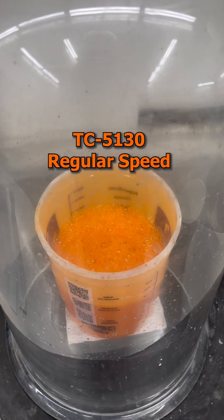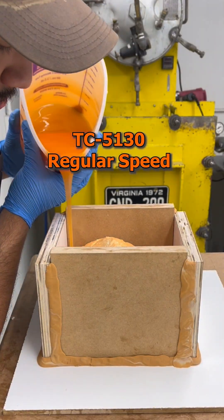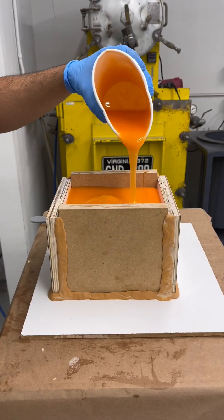I then built a box around the project, and poured in a dyed degassed batch of TC5130 until the piece was covered.